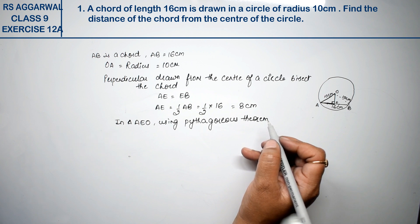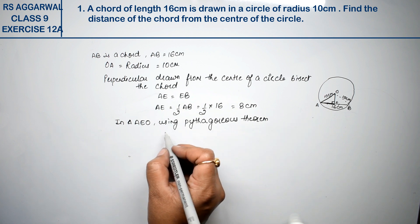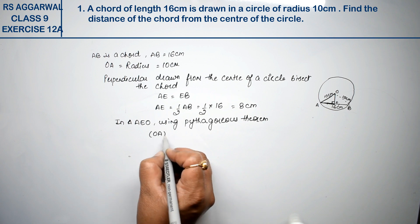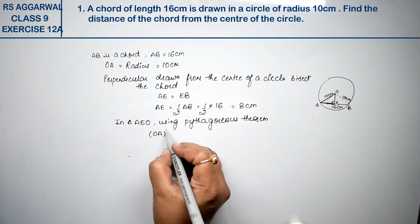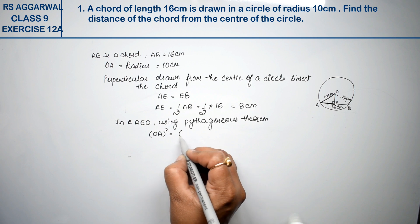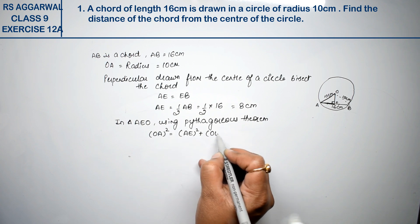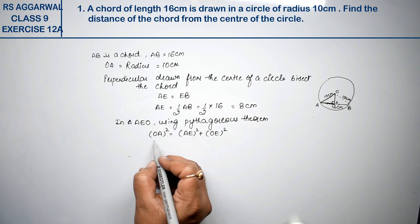In Pythagoras Theorem, OA is our hypotenuse. The whole square is equal to AE whole square plus OE whole square. What is OA? We have 10.